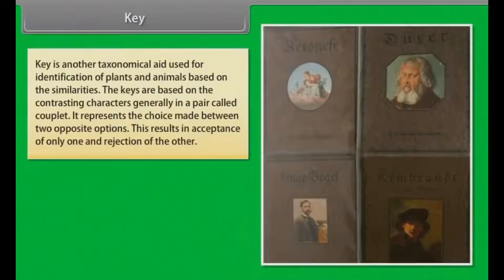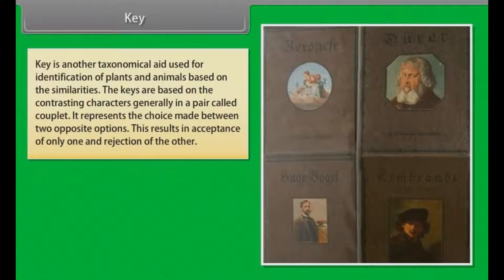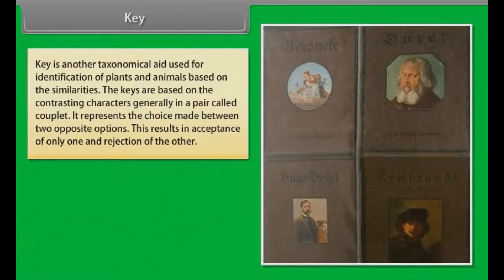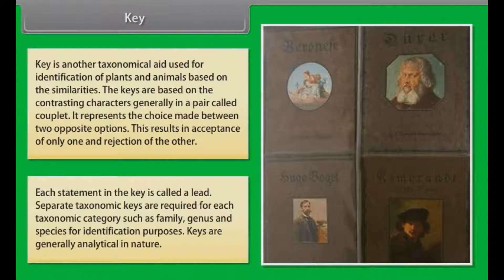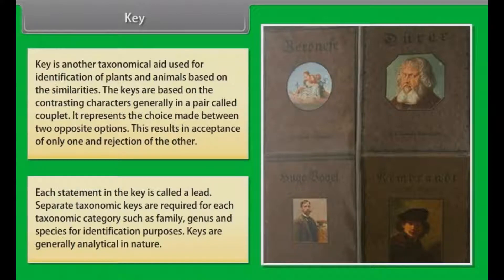A key is a taxonomical aid used for identification of plants and animals based on similarities. Keys are based on contrasting characters, generally in pairs called couplets. It represents the choice made between two opposite options — resulting in acceptance of only one and rejection of the other. Each statement in the key is called a lead. Separate taxonomic keys are required for each taxonomic category such as family, genus and species. Keys are generally analytical in nature.